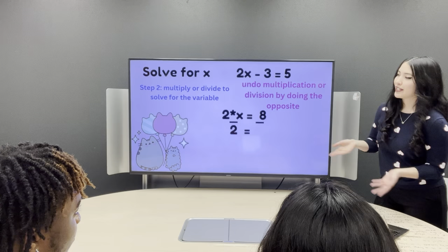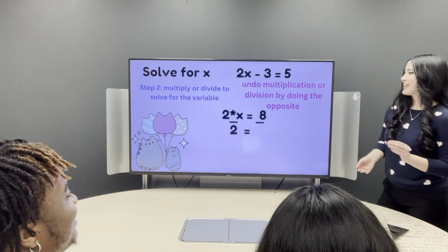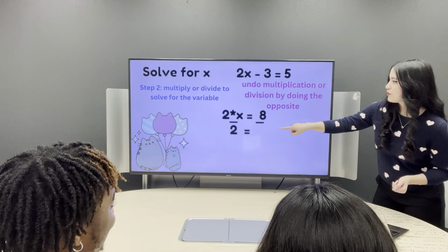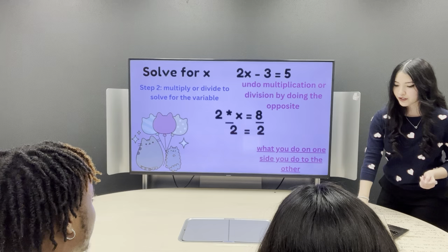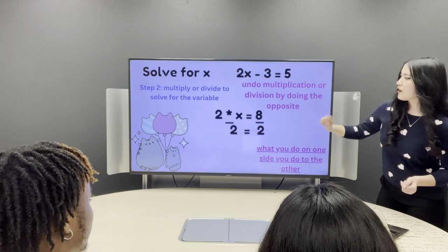Can somebody tell me? Division! Good. Okay, and as you can see, 2x is being divided by 2. Like it's saying to do right here, doing the opposite of what's being done to x. And then, what you do on one side, you do to the other. So, because it's being divided by 2 over there, on the other side of the equation, we also have to divide by 2.